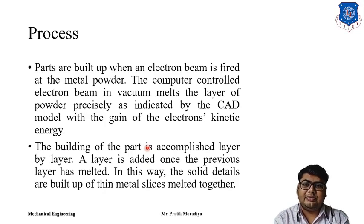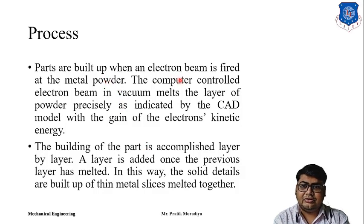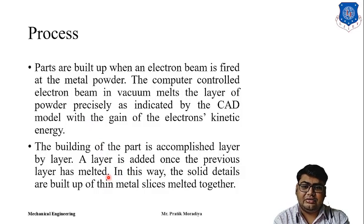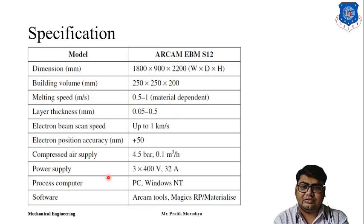The electron beam is fired at the metal powder and is controlled by computers. Layer by layer, the electron's kinetic energy is converted into heat energy and the powder melts. Once one layer is melted, the next layer of powder is applied on top, and the next layer is melted. This way we can obtain a complete solid part.